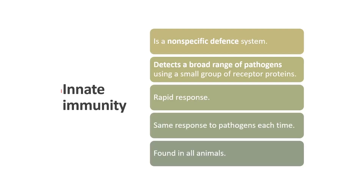Let's dig into the Innate Immunity System. The first characteristic of the Innate Immunity System is that it is a non-specific event. It detects a broad range of pathogens using small groups of receptor proteins. It also has a rapid response compared to adaptive immunity, and it shows the same response to pathogens each time and is found in all animals.